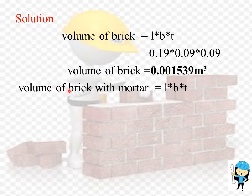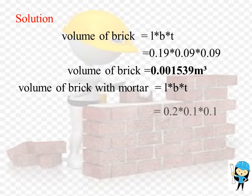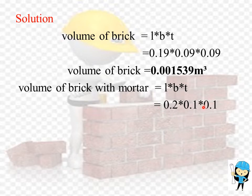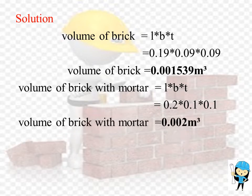The volume of one brick with mortar is calculated by the same formula: length times breadth times thickness. The thickness of the mortar is 0.01 meter. By adding 0.01 meter to each dimension, we get the length as 0.2 meter, the breadth as 0.1 meter, and the thickness as 0.1 meter. Multiplying these three values gives the volume of brick with mortar as 0.002 meter cube.